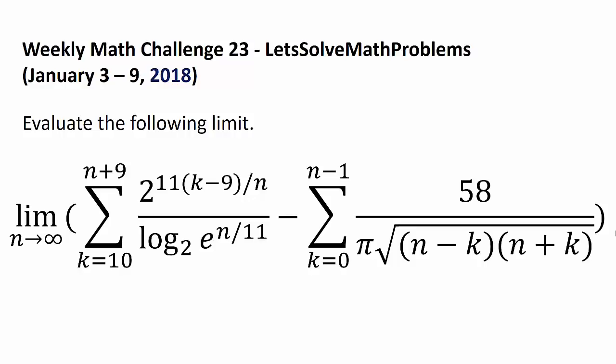of the sum from k equals 10 to n plus 9 of 2 to the power of 11 times k minus 9 over n, all divided by log base 2 of e to the n over 11,